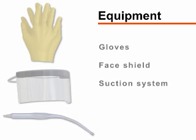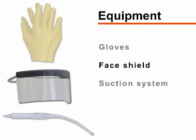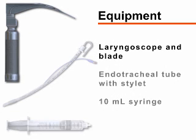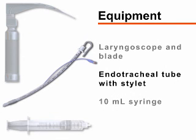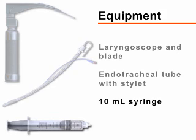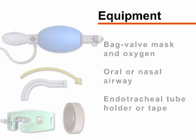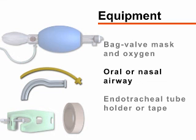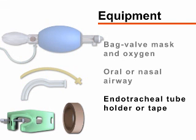Begin by gathering the required equipment. You will need gloves, a protective face shield, and a working suction system, a laryngoscope with appropriate blade, an endotracheal tube with stylet, and a 10 milliliter syringe. You will also need a bag valve mask attached to oxygen, an oral or nasal airway, and tape or an endotracheal tube holder.